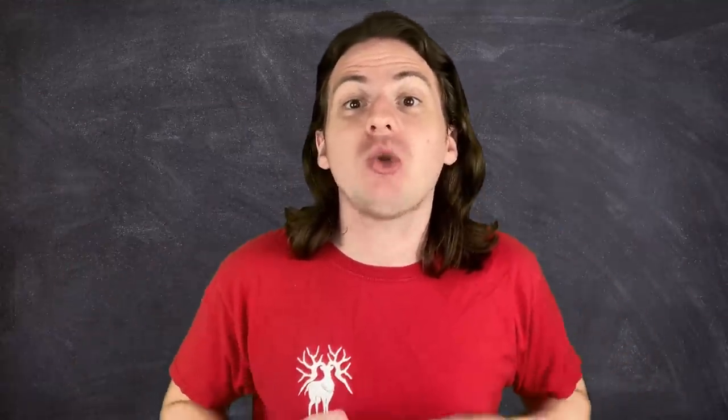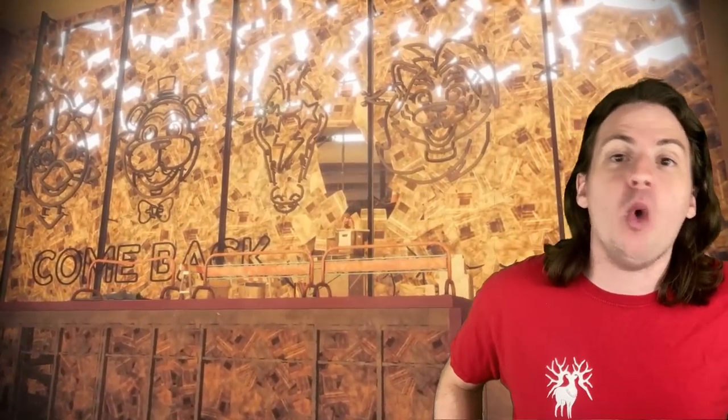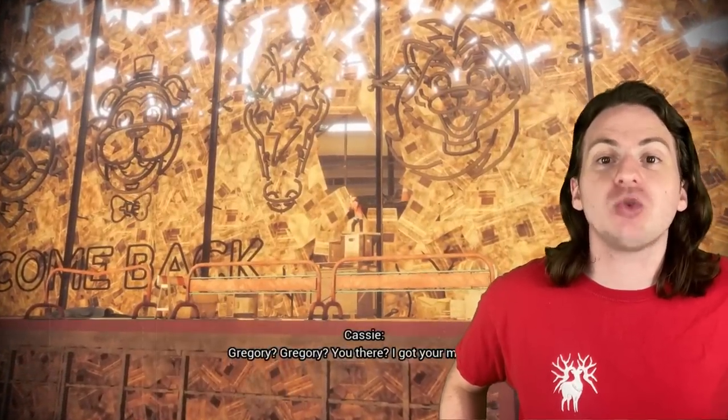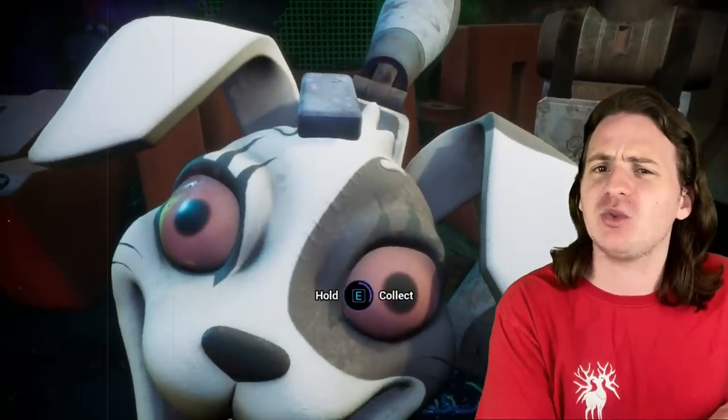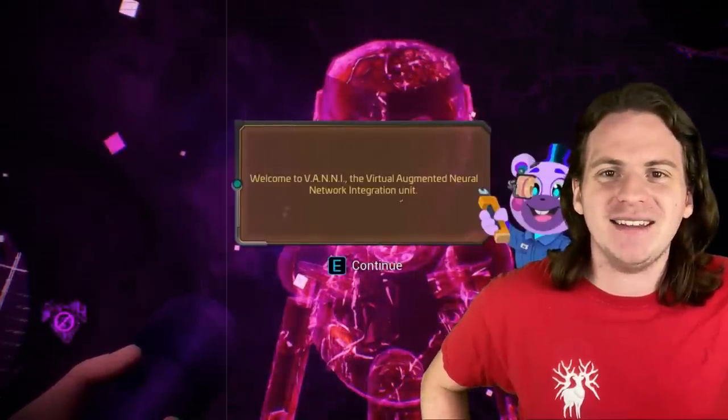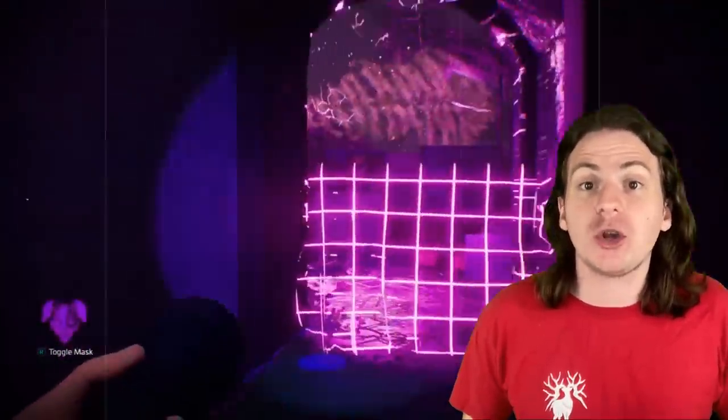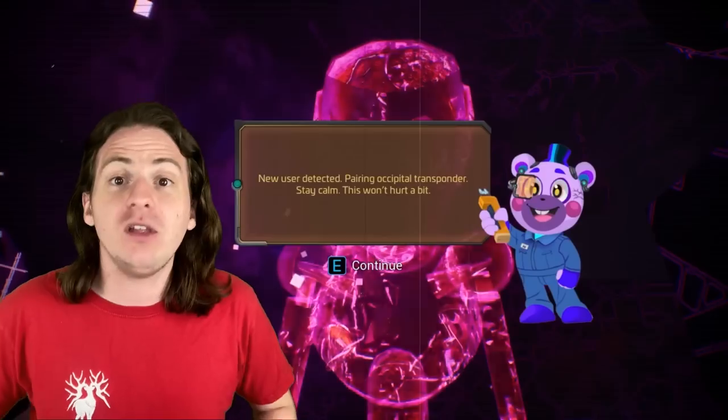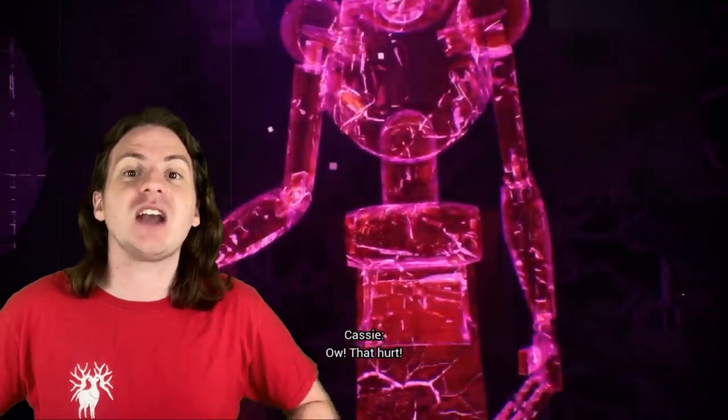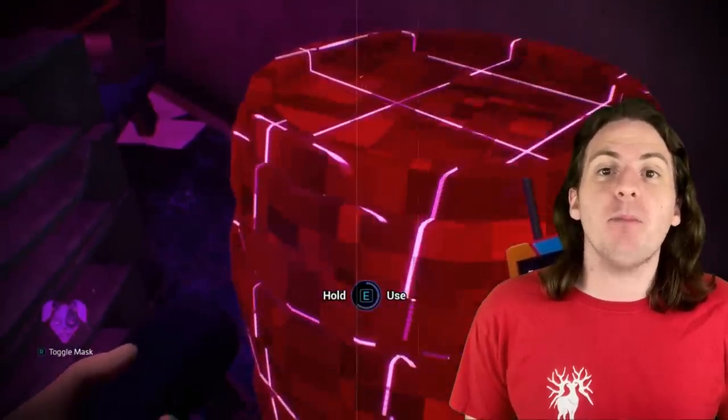Before we get into this mask, I'm going to try my best to recap everything that happens in this DLC as quickly as I can. Also, spoilers for literally everything. You play as a girl named Cassie who wanders into the Pizzaplex after getting a distress call from her friend Gregory saying he's trapped and needs her help getting out. After exploring around a bit, you're given a totally not suspicious white rabbit mask called the Virtual Augmented Neural Network Integration Unit, or the Vani unit. This mask allows Cassie to walk through certain solid real world objects.